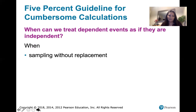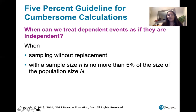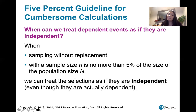Here are the circumstances. When we're sampling without replacement — you have some larger population and you are pulling items from it without putting them back — every time you do that, you're often changing probabilities. So typically, if you're sampling without replacement, the corresponding events are dependent. When we're doing that with a sample size n that is no more than 5% of the population size N — that is, the sample size is less than or equal to 5% of the population — then we can treat the selections as if they're independent, even though they're actually not, making the calculations much simpler.